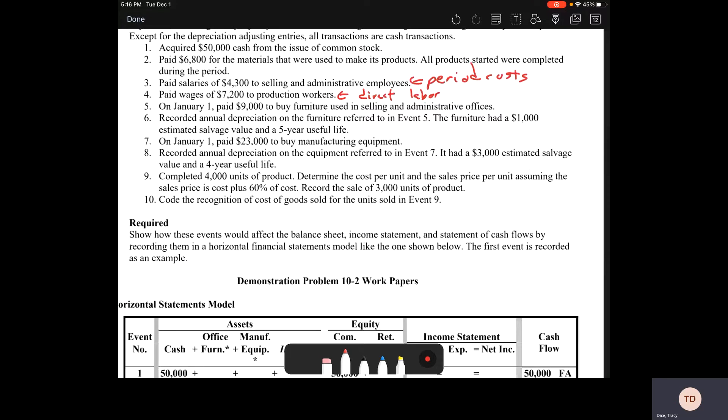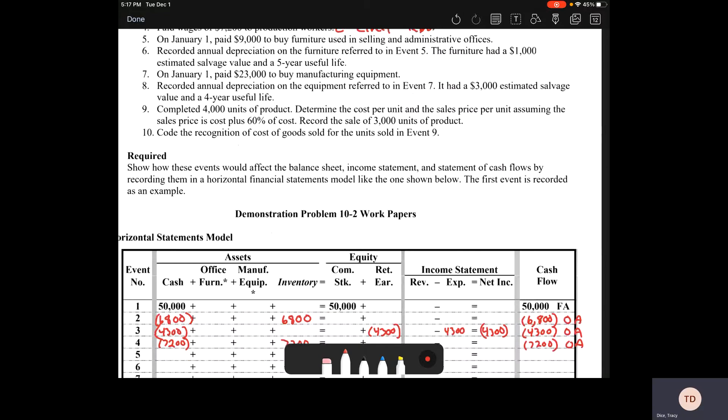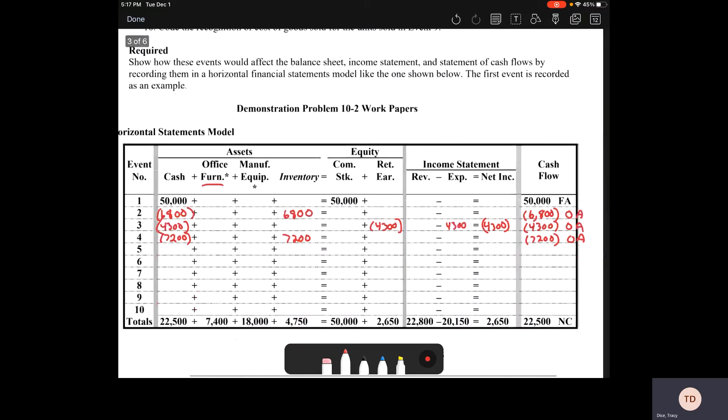Number five, we are paying $9,000 to buy furniture used in selling and administrative offices. We know that these are not going to be part of our inventory because they're being used in the selling and administrative offices. But when we look at this, it's furniture that is considered an asset, so this is an asset exchange. We've got $9,000 worth of furniture from cash, and it's going to go into our furniture assets column. We're spending that money, so it's still got to come out of our cash flow.